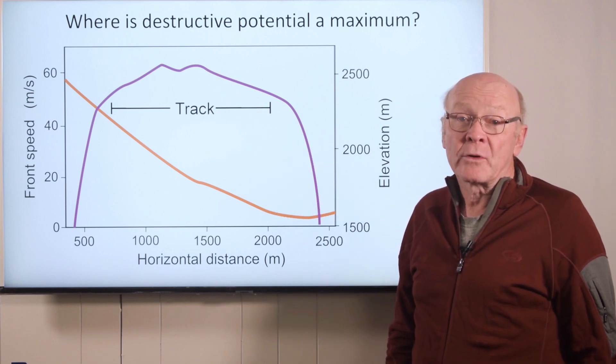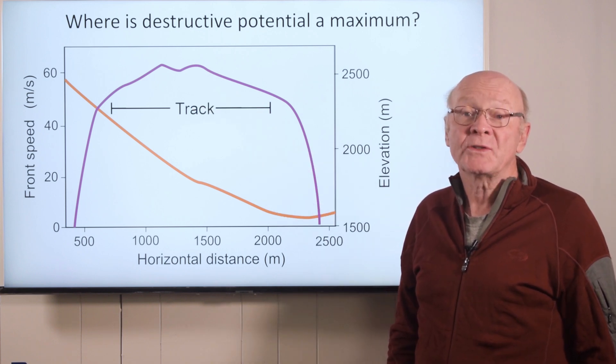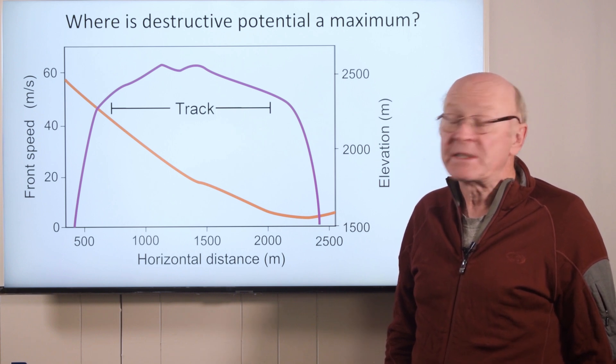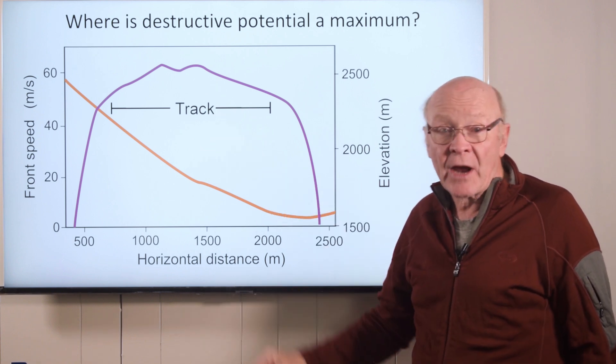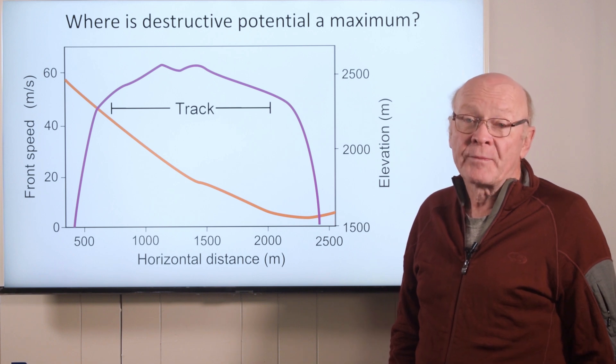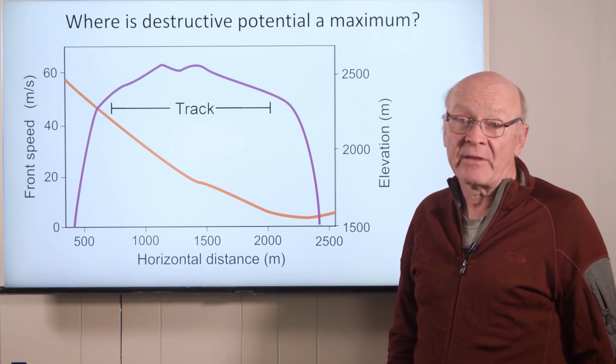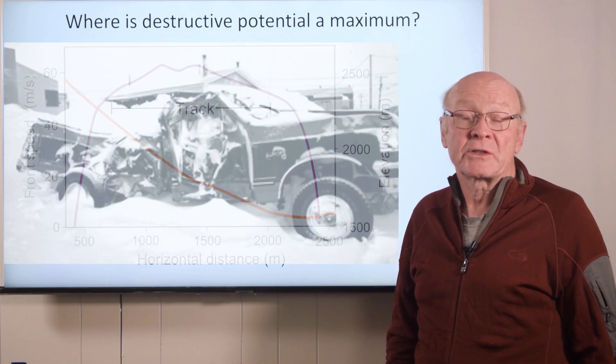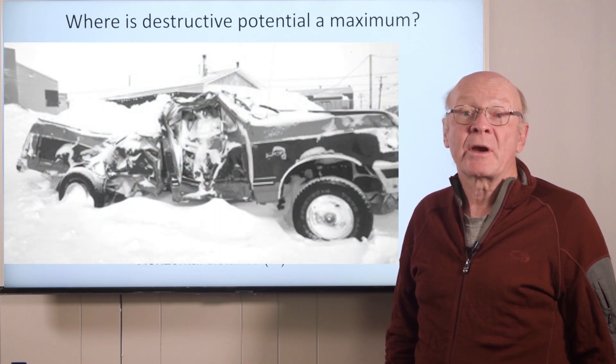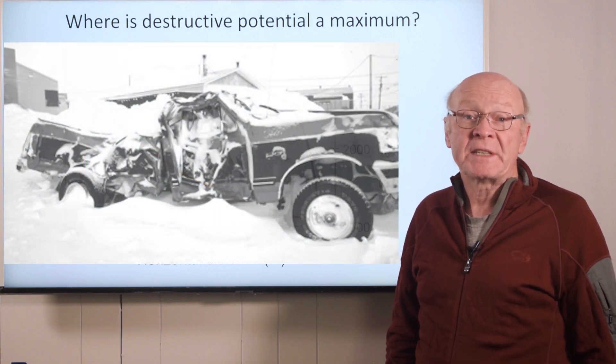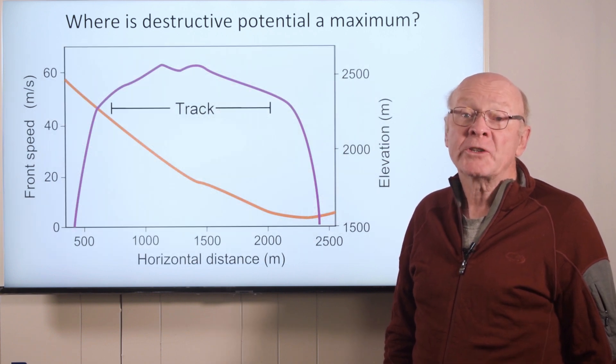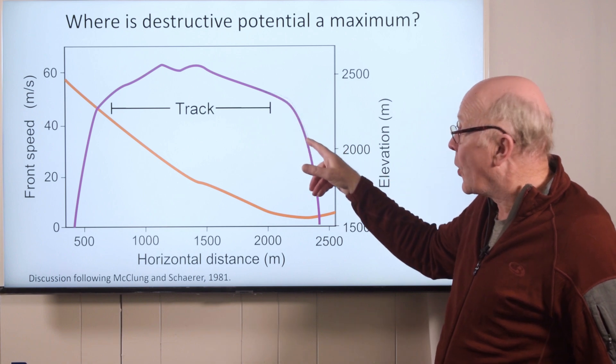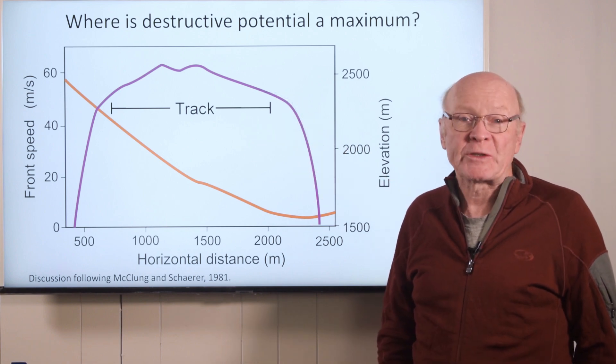However, the impact force and destructive potential also depend on the accumulated mass and flow height, which tend to increase in the track. Consequently, when classifying the size of an avalanche based on its destructive potential, for example, could it destroy a car, we should be considering wherever the destructive potential is greatest. For large avalanches, this often occurs in the lower part of the track or upper part of the run-out zone.